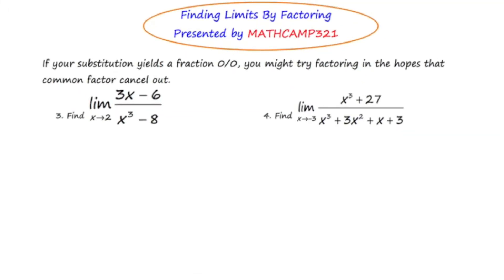In our last example, number 4, we're asked to find the limit of this very large rational expression as x approaches negative 3. Let's first try direct substitution and see what happens. Let's plug in negative 3 in for all occurrences of x. So let's start there. Negative 3 cubed is negative 27, and negative 27 plus 27 is 0. So already this isn't looking very good. Looking at the denominator, we have negative 3 cubed again, and we already know that that's negative 27. Negative 3 squared is 9, and 9 times 3 is 27. X is negative 3, and then we'll add 3 to this. So we end up getting 0 over 0, or again, this is called indeterminate form, and it means you really have to try something else. It would be unacceptable to leave an answer of 0 over 0.